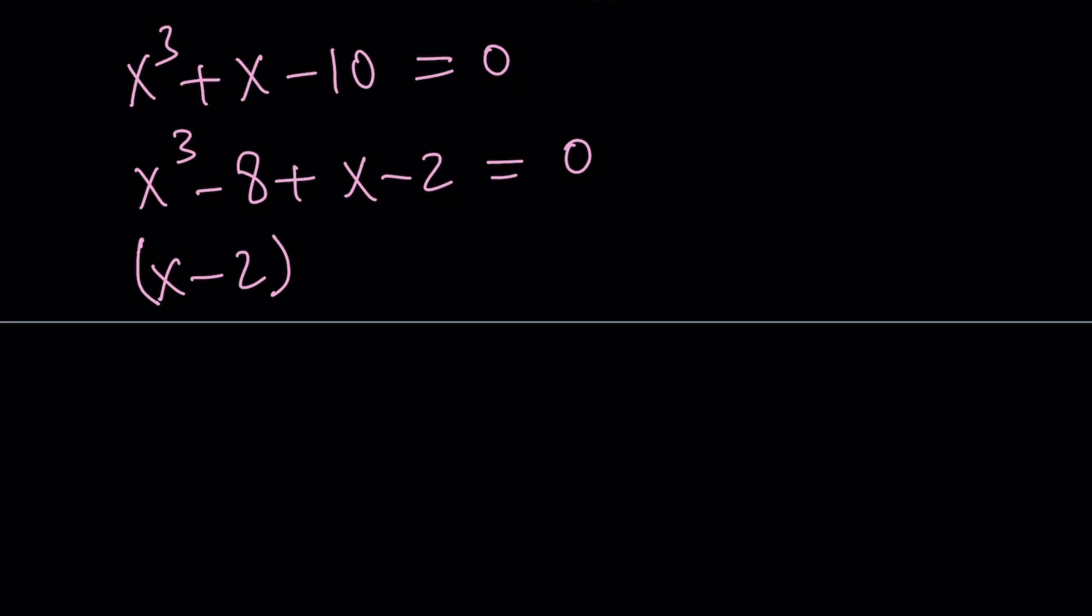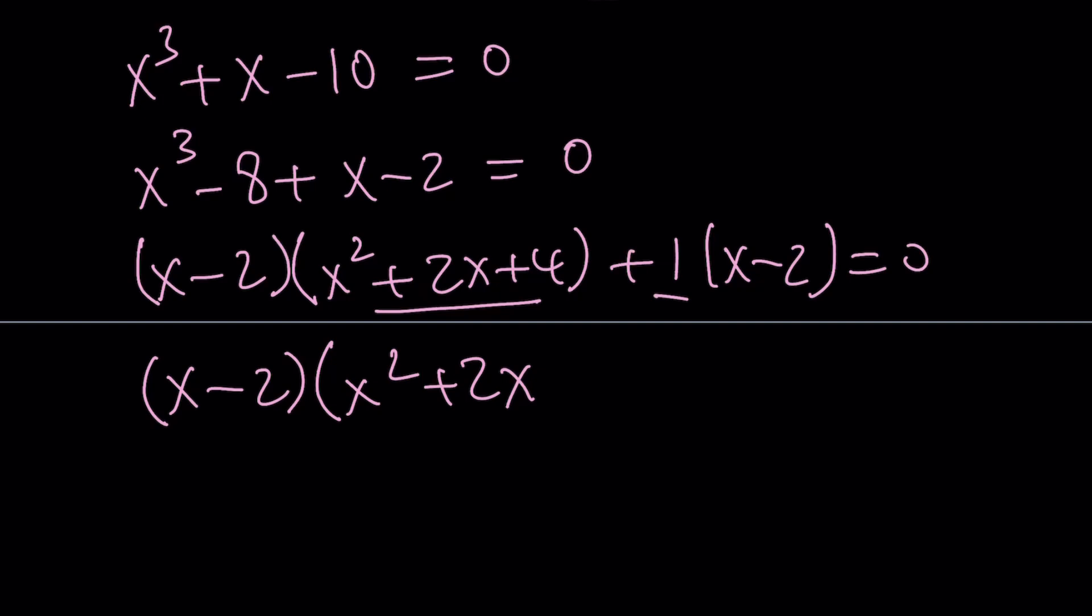We're going to factor x cubed minus 8, difference of 2 cubes. So x minus 2 multiplied by x squared plus 2x plus 4. And then this is just 1 times x minus 2. And obviously, x minus 2 is a common factor because x equals 2 is a solution, factor theorem, whatever. And now we're going to add these two. x squared plus 2x plus 4 plus 1. x squared plus 2x plus 5. Awesome.